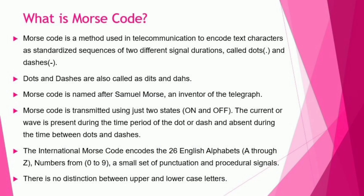Now, let's learn what Morse code is. Morse code is a method used in telecommunication to encode text characters as standardized sequences of two different signal durations called dots and dashes. Dots and dashes are also called dits and dahs. Morse code is named after its inventor Samuel Morse. Morse code is transmitted using just two states — on and off. The current or wave is present during the dot or dash and absent during the gaps between them. The international Morse code encodes the 26 English alphabets from A to Z, numbers from 0 to 9, a small set of punctuation and procedural signals, and there is no case difference in Morse code.